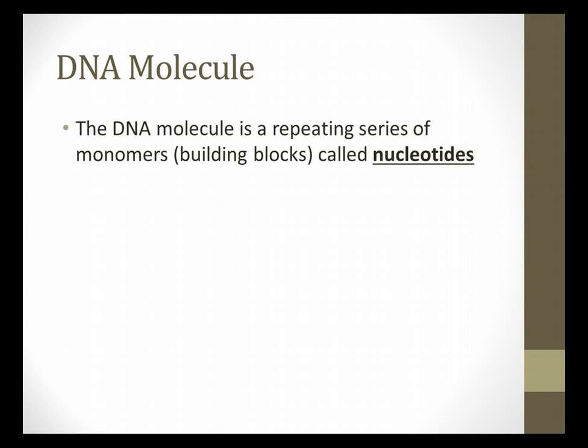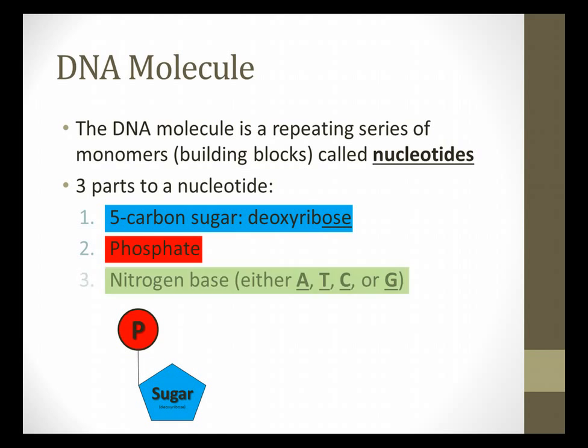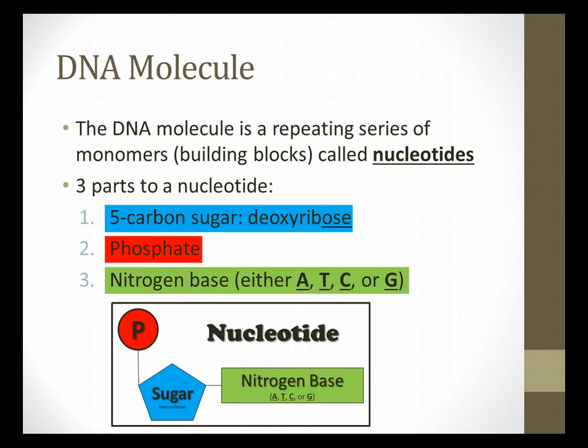Now, the molecule itself, as you've already seen parts of it, it is composed of a repeating series of monomers, probably you remember that before, those building blocks called nucleotides. The nucleotide consists of three parts, which you've already seen, but I'm going to combine them. You've got three parts to a nucleotide. You've got that 5-carbon sugar, called deoxyribose. You have that phosphate group, attached to it. And finally, you have that nitrogen base. And remember, that nitrogen base is one of four types, A, T, C, or G. Collectively, that phosphate, sugar, and base is called a nucleotide.